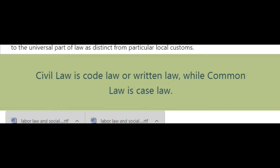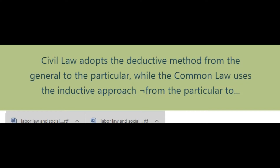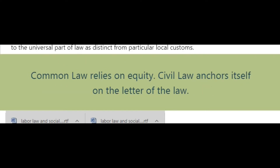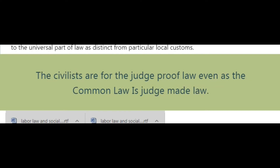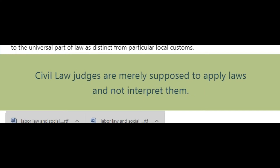Civil law adopts the deductive method — from the general to the particular — while common law uses the inductive approach, from the particular to the general. Common law relies on equity; civil law anchors itself on the letter of the law. The civilists are for the legislature even as common law is judge-made law. Civil law judges are merely supposed to apply laws and not interpret them.